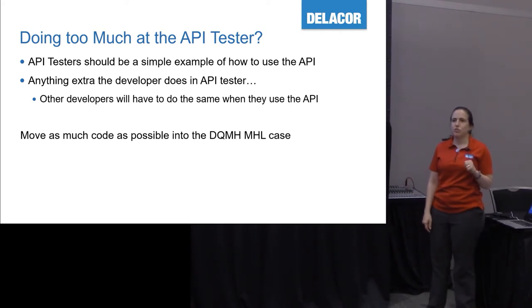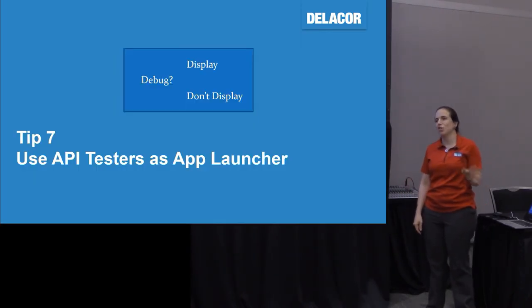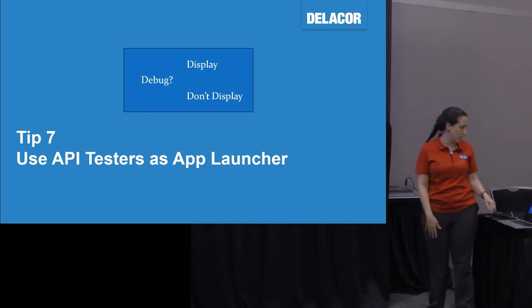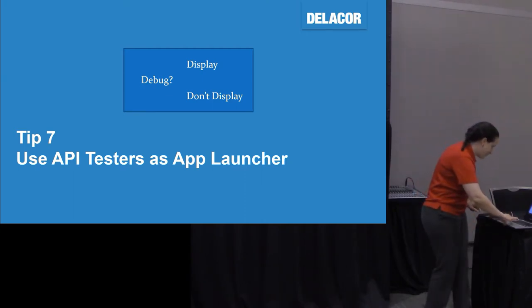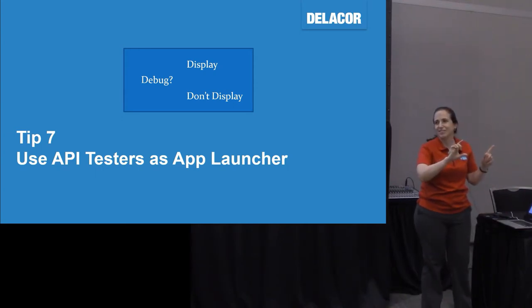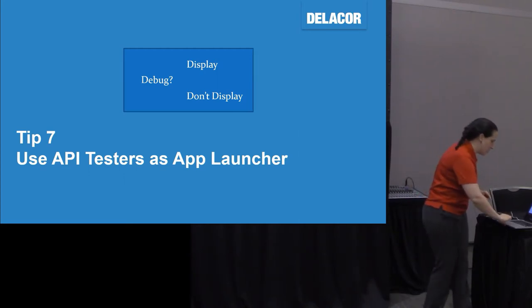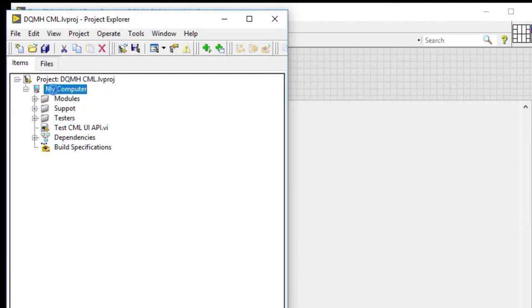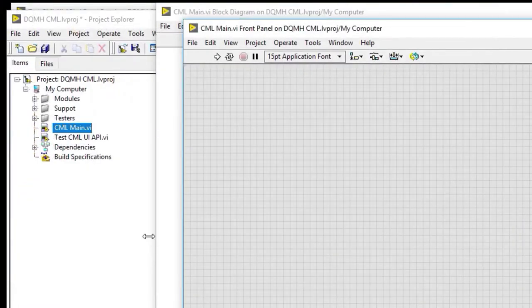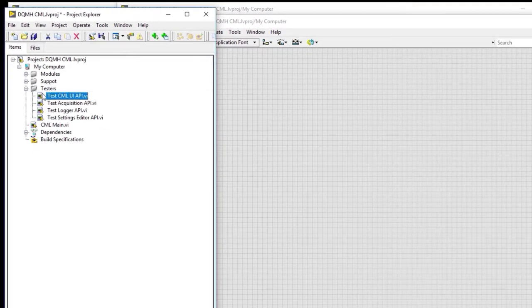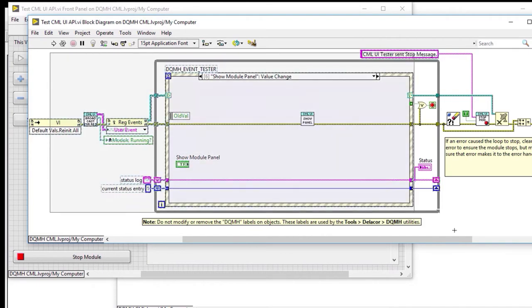Use API testers as application launchers. I've heard people say: 'These API testers are awesome, but when I build the executable, how do I include them so I have a sniffer and debugging tool included?' So what we do is create a copy of the API tester. We go to the test API tester, copy only the code we need — really all the code except the error handling at the end — and paste it into this new launcher VI.